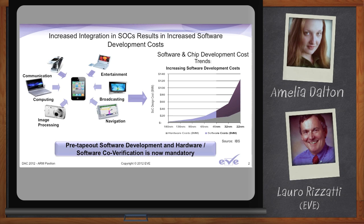Of course, the slide is just mapping cost, but you can easily replace that with complexity. So we can say that below 45 nanometers, the complexity of designs is escalating, and this is posing major challenges in the design flow.